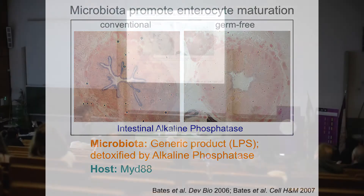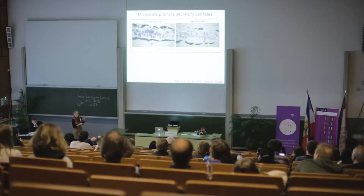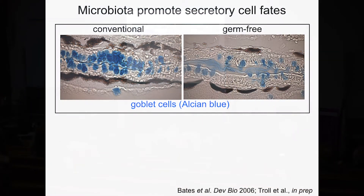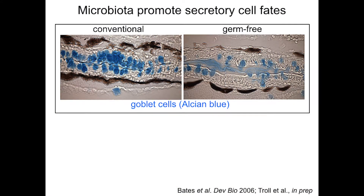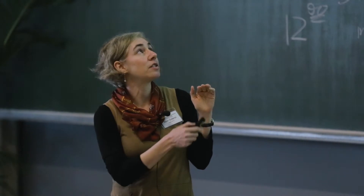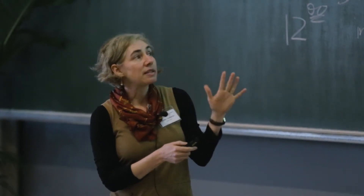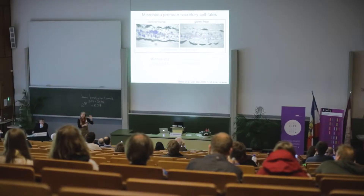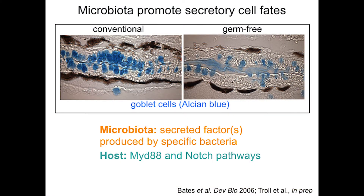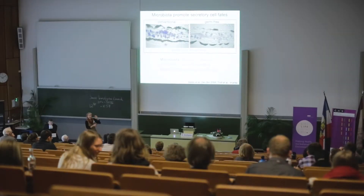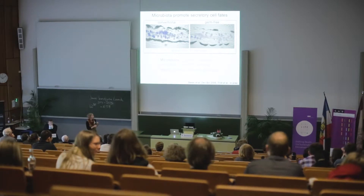Another germ-free trait we've described is a paucity of secretory cells — shown here for mucus-secreting goblet cells, which make up a smaller proportion of the total intestinal epithelium in germ-free versus conventional animals. In this case we don't know the specific factor, but we know that certain specific bacteria produce a secreted factor that will reverse that germ-free trait. We know that it involves signaling through MyD88 and NOTCH signaling pathways, which are classical pathways determining cell specification in the epithelium.